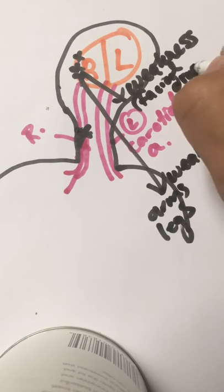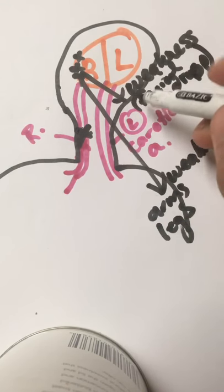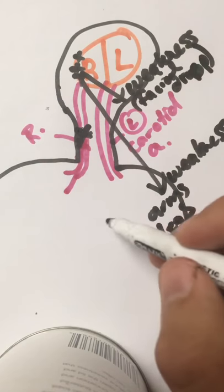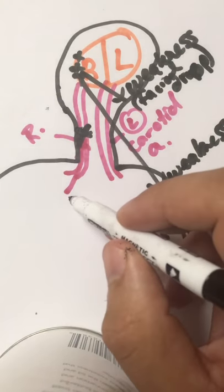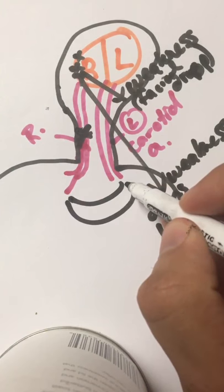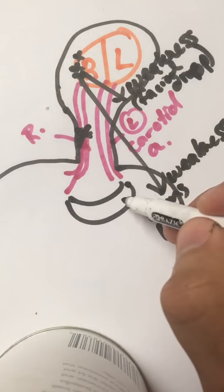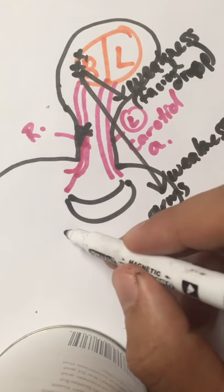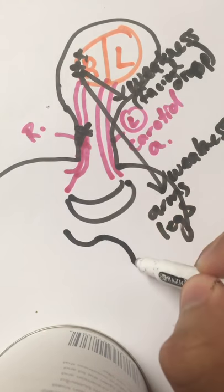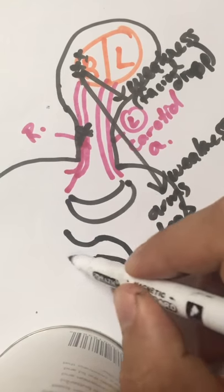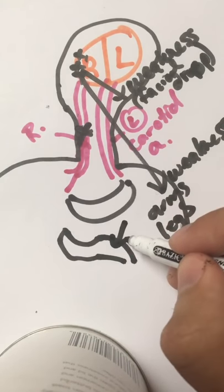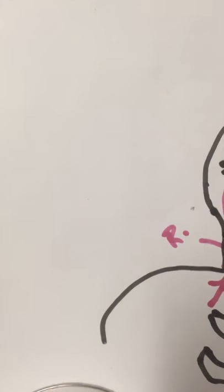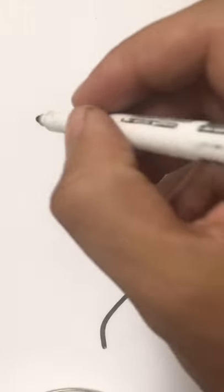So you have what's called a facial droop. Basically somebody tries to smile but they can't lift up the smile. So normally you would have a smile that's like this on both sides, but if the right side of the brain is damaged then the left side can't smile. So what happens is the right can go up but then the left side is down. So they call this the facial droop right here.